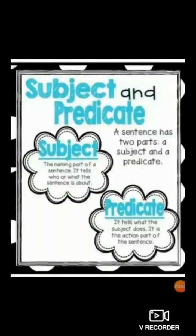A sentence has two parts: subject and a predicate. As I have explained, sentences are made up of words and words are made up of alphabets, letters. When letters come together, words are formed. When words come together, sentences are formed. And when sentences come together, a paragraph is formed.